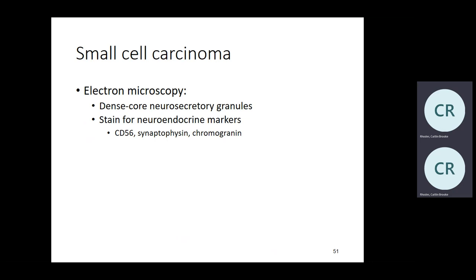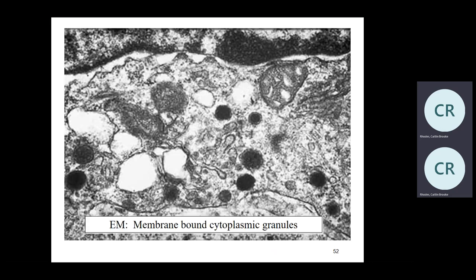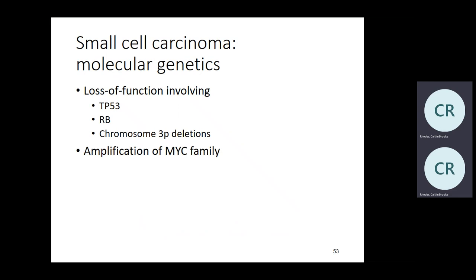Electron microscopy shows dense-core neurosecretory granules — that's why neuroendocrine markers CD56, synaptophysin, and chromogranin are positive. We don't use EM much anymore because we have immunostains and molecular markers. EM is now mainly used for ciliary diseases, viral identification, and renal glomerulopathies.